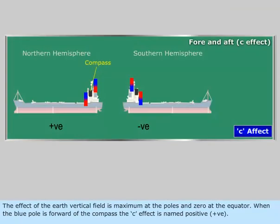The effect of the Earth's vertical field is maximum at the poles and zero at the equator. When the blue pole is forward of the compass, the C effect is named positive.